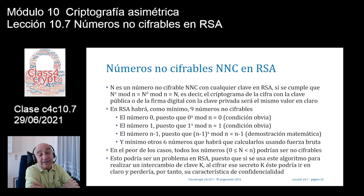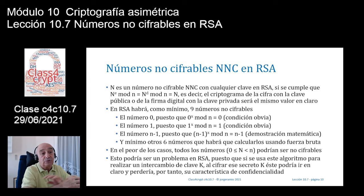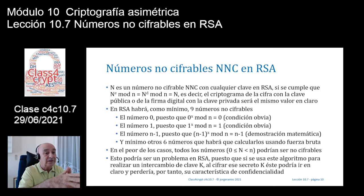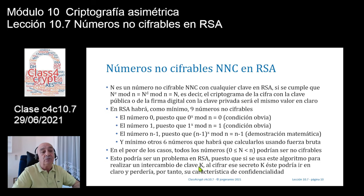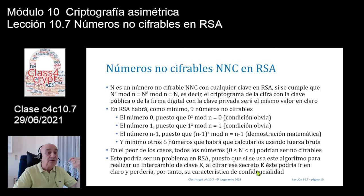Esto podría ser en principio un problema. ¿Qué sucede si yo quiero utilizar RSA para enviarte algo de forma confidencial? Te quiero enviar un número secreto, esa clave K, que luego vamos a utilizar para una posterior cifra simétrica, y cuando yo cifro ese secreto K, sin darme cuenta, he utilizado un número que era un número no cifrable de tu clave.